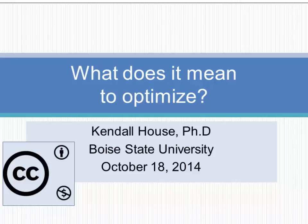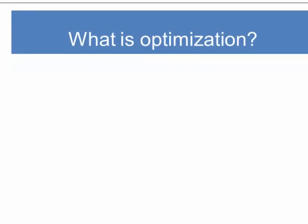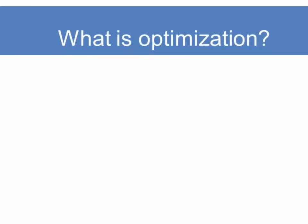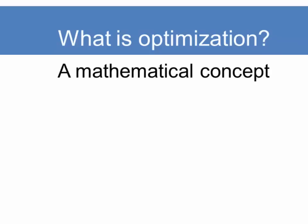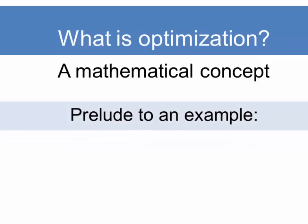This presentation is called what does it mean to optimize. So what is optimization? Well, as it turns out, it has two characteristics. One is it's really important in evolutionary theory, and the other is you usually don't get into a discussion of it too much until first-year calculus. So optimization is a mathematical concept, and we've got the challenge of explaining it and keeping it in basic arithmetic.